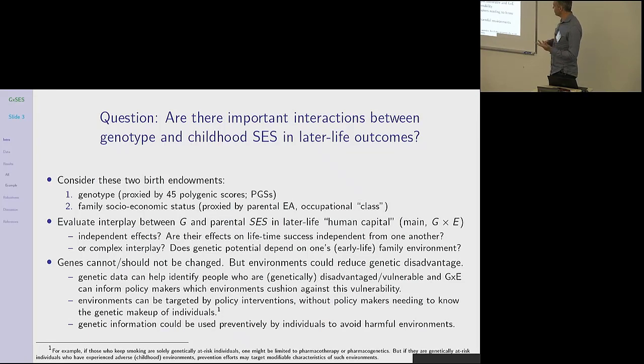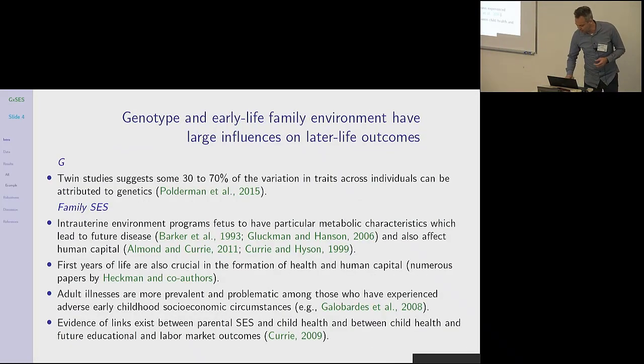Genetic information can also be used preventively by individuals to avoid harmful environments. Genotype and early life family environments have very large influences on later life outcomes. Basically, twin studies suggest that some 30 to 70 percent of the variation in traits across individuals can be attributed to genetics. Basically, everything is heritable. So genes matter.